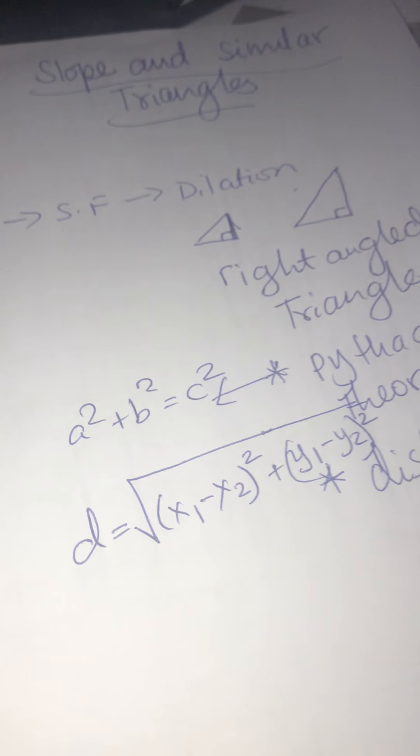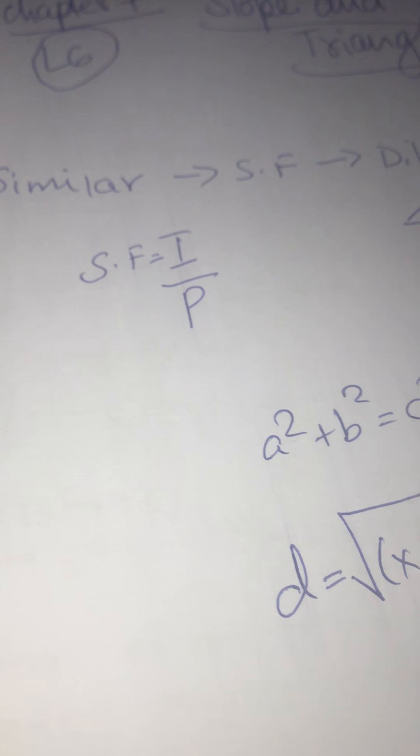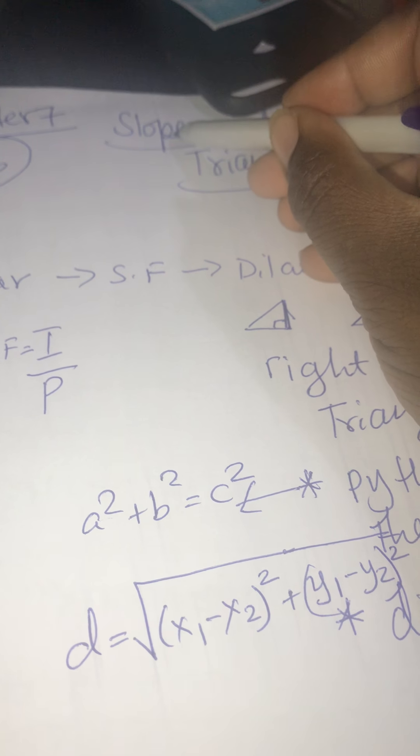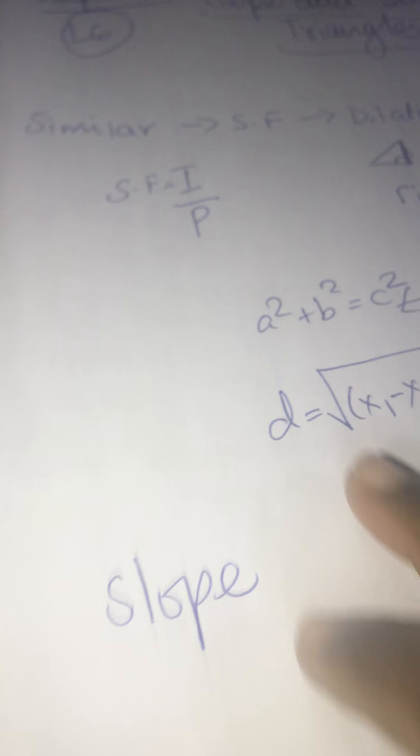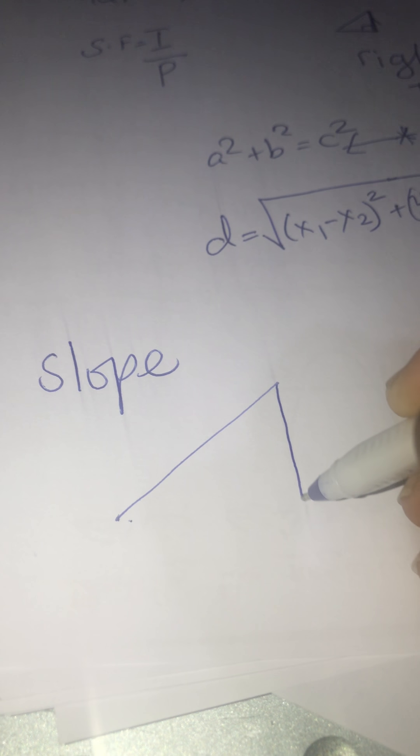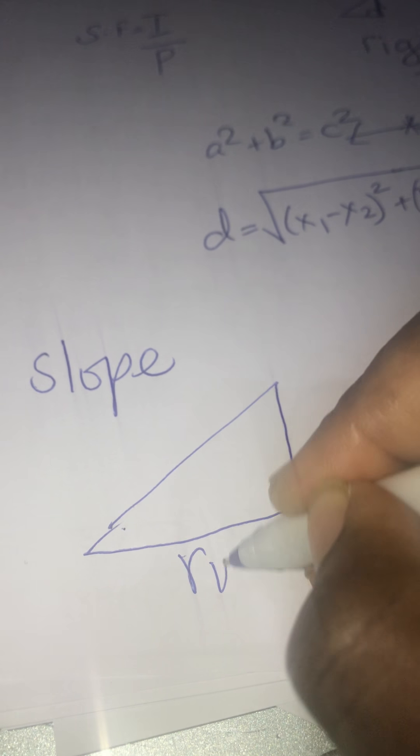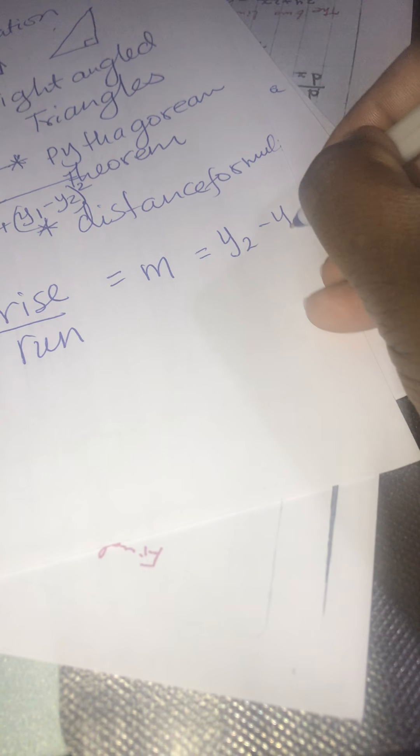Because I saw right triangles, I also need to think about scale factor. Scale factor equals image over pre-image — I find the corresponding sides. And for slope, I have to remember from term 1: slope is rise over run, and slope is also M, which equals Y2 minus Y1 over X2 minus X1.